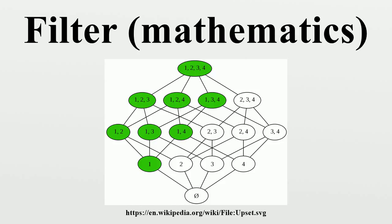Cauchy filters are required to have the following properties: for each x in X, the ultrafilter at x is Cauchy; if F is a Cauchy filter and F is a subset of a filter G, then G is Cauchy; if F and G are Cauchy filters and each member of F intersects each member of G, then F ∩ G is Cauchy. The Cauchy filters on a uniform space have these properties, so every uniform space defines a Cauchy space.